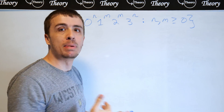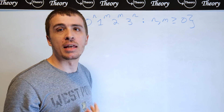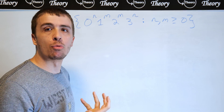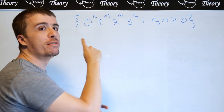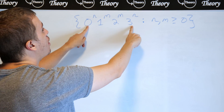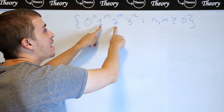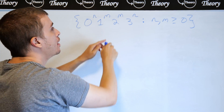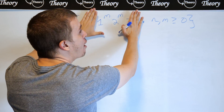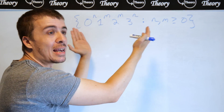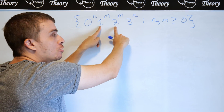n and m are at least zero, but there's nothing in common between them — n doesn't have to be greater than m or equal or anything. Another thing to be aware of is where the counts of the variables are located. The n's are on the outside and the m's are on the inside, so you can look at this grammar from the inside out.